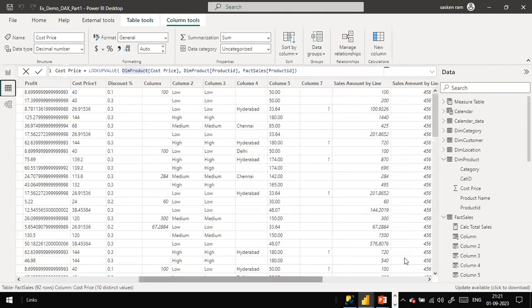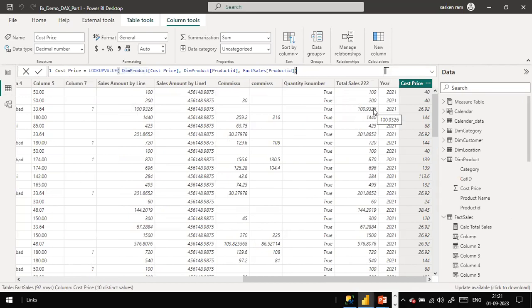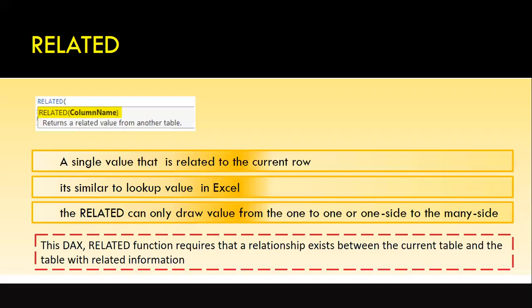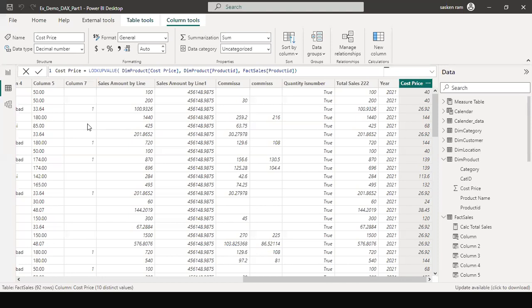If you click on the cost price column, you will find the lookupValue formula used there. Next one is the related function. We have something called 'related' and 'relatedTable'. The DAX related function takes a single column related to the current row. This is similar to Excel's lookup function, but 'related' can draw values from the one side to the many side. The same thing we did using lookupValue can be achieved using the related function, but with related you don't have to specify as many arguments.